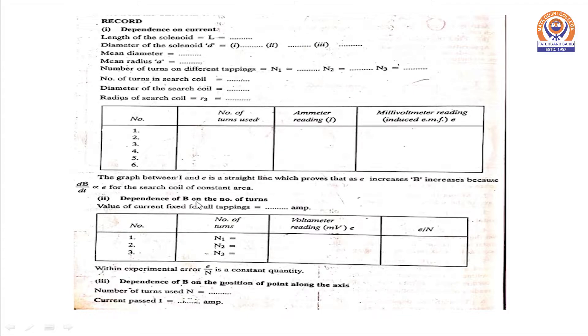Second table shows the dependence of B on number of turns. As we increase the number of turns from 220 to 440 to 660, millivolt meter reading that is induced EMF e will increase and the ratio of e by n will be a constant quantity.